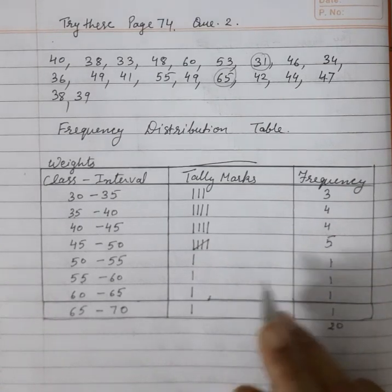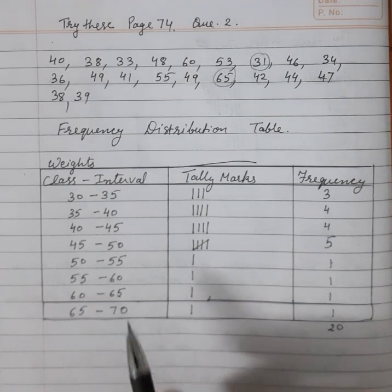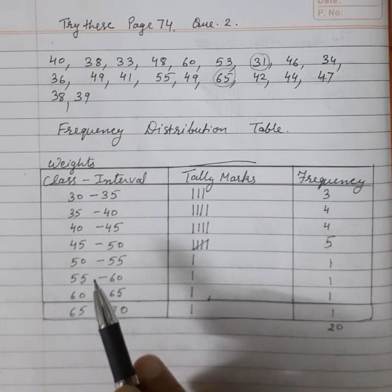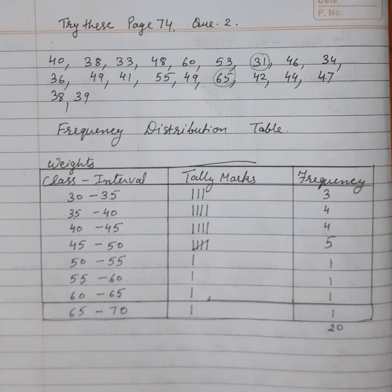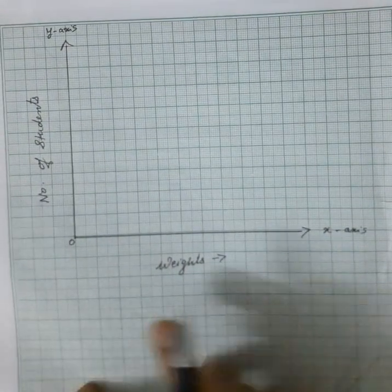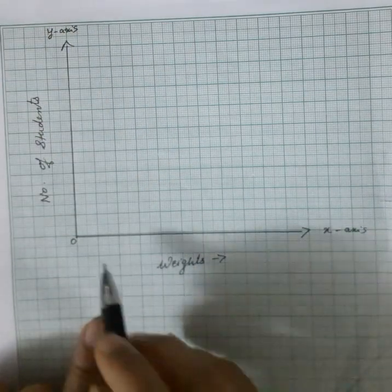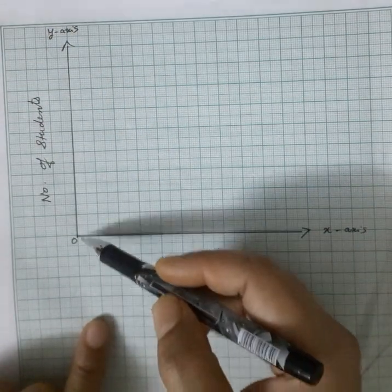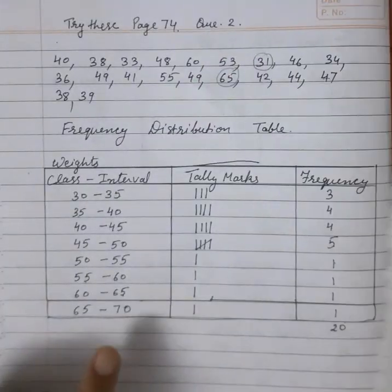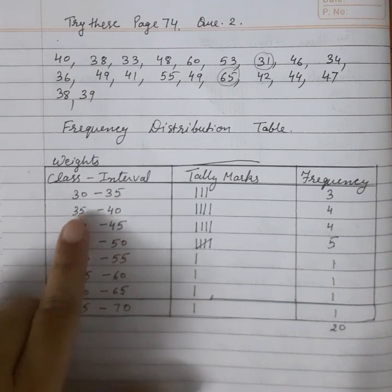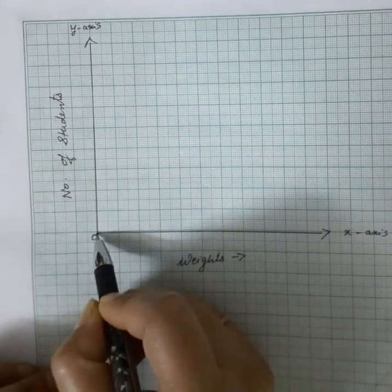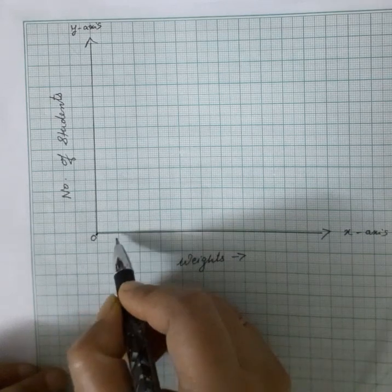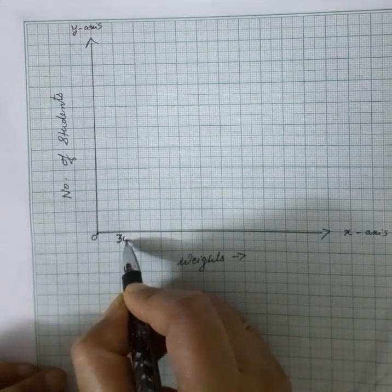Now that we have the frequency table of grouped data, this grouped data can be represented on a graph in the form of a histogram. I will show you how to represent it on the graph. On the graph we have an x-axis and y-axis. On the x-axis we will mention the groups, and on the y-axis the number of students will come. The point where the two axes meet is always 0, and our first class interval starts from 30.